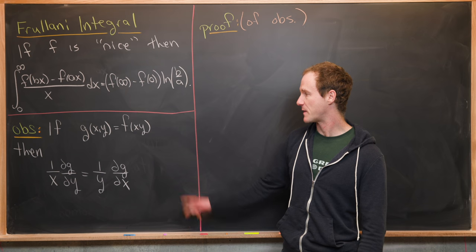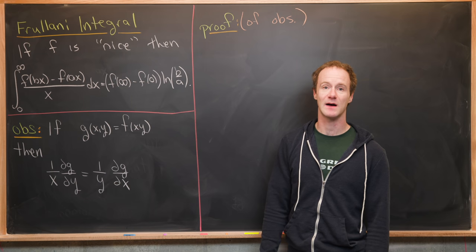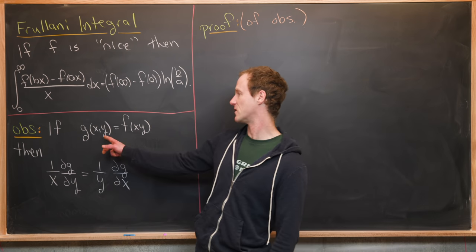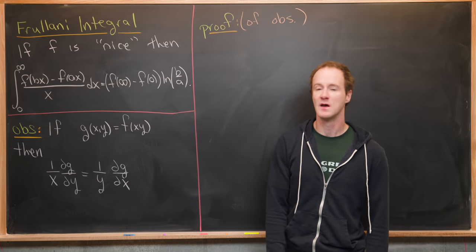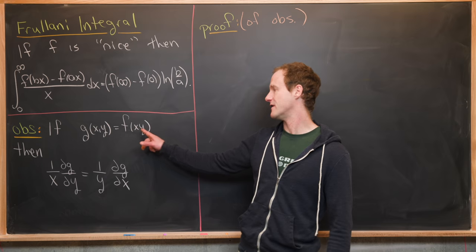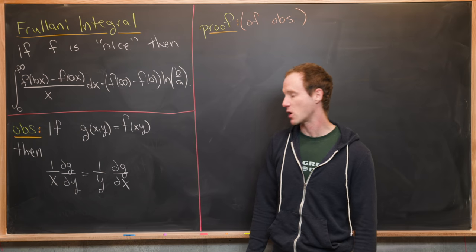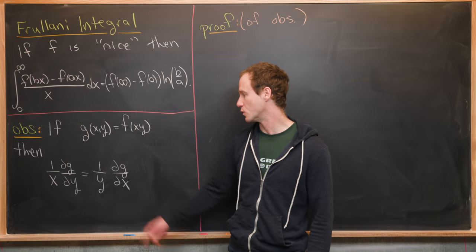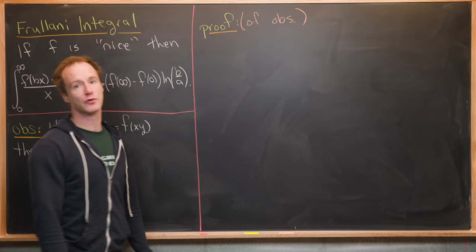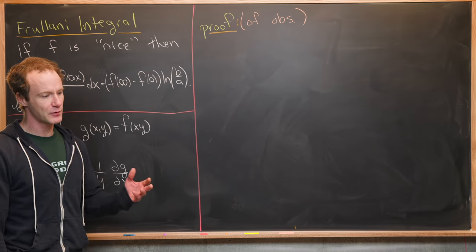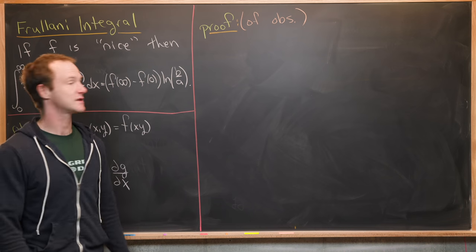We're going to start by proving an observation which will help us streamline this proof. That observation is: if we have a function of two variables g(x, y) — really a function of one variable evaluated at x times y — then (1/x) times the partial of g with respect to y equals (1/y) times the partial of g with respect to x. The proof uses the multivariable chain rule.